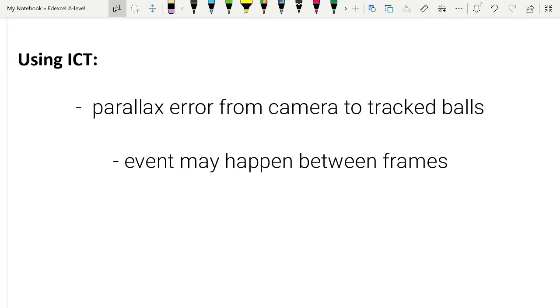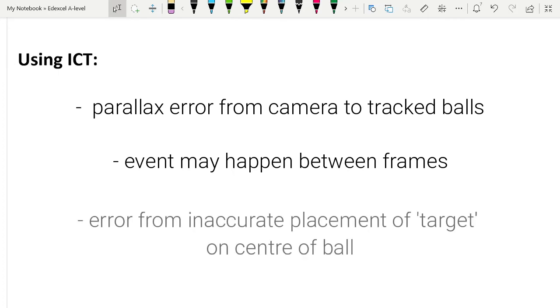The third disadvantage with this particular system is that when you're using the tracker system, you place a little target and click over where the center of the ball is. That is a judgment call on your part. For each frame, you have to say where the center of the ball is so that the software can track it. There is some error over making that judgment, especially if you've got many, many frames to do. You're likely to become less accurate as you continue along. There is some question over the accuracy of your marking of frames. You have to be very careful about that.